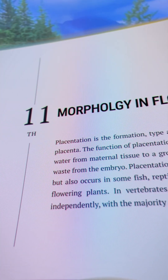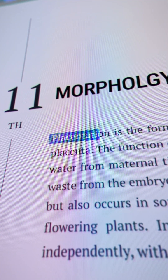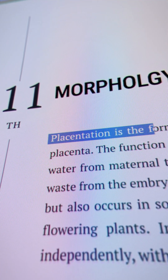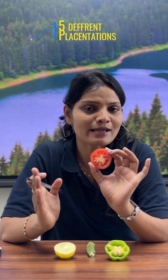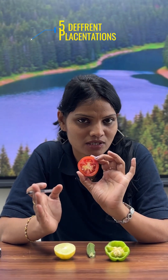So dear students, class 11th, Morphology of Flowering Plants chapter — placentation is very important. So placentation is the arrangement of ovules within the ovary. There are 5 different types of placentation.